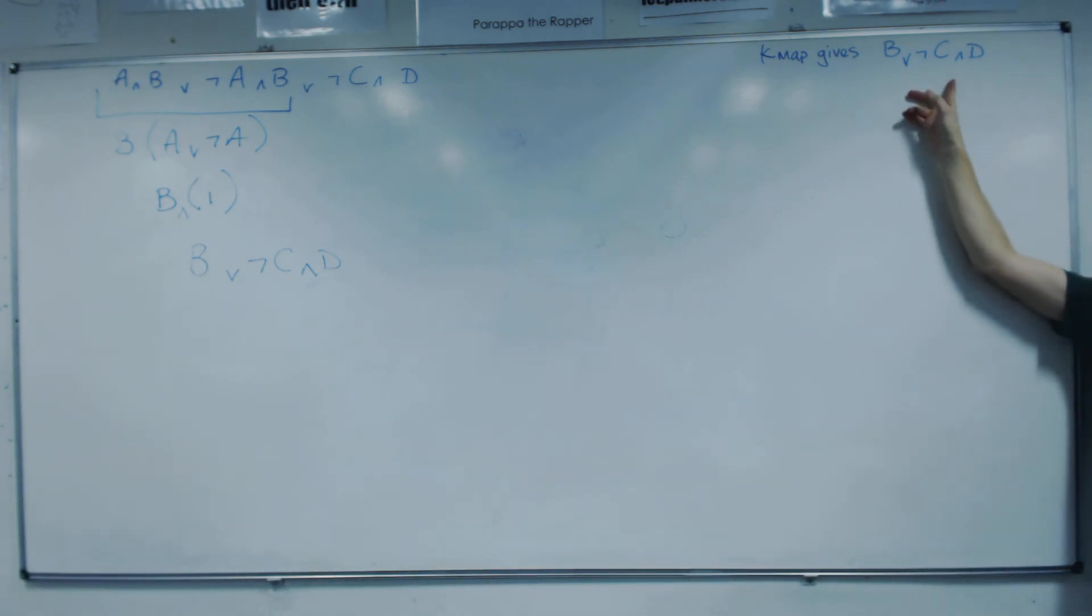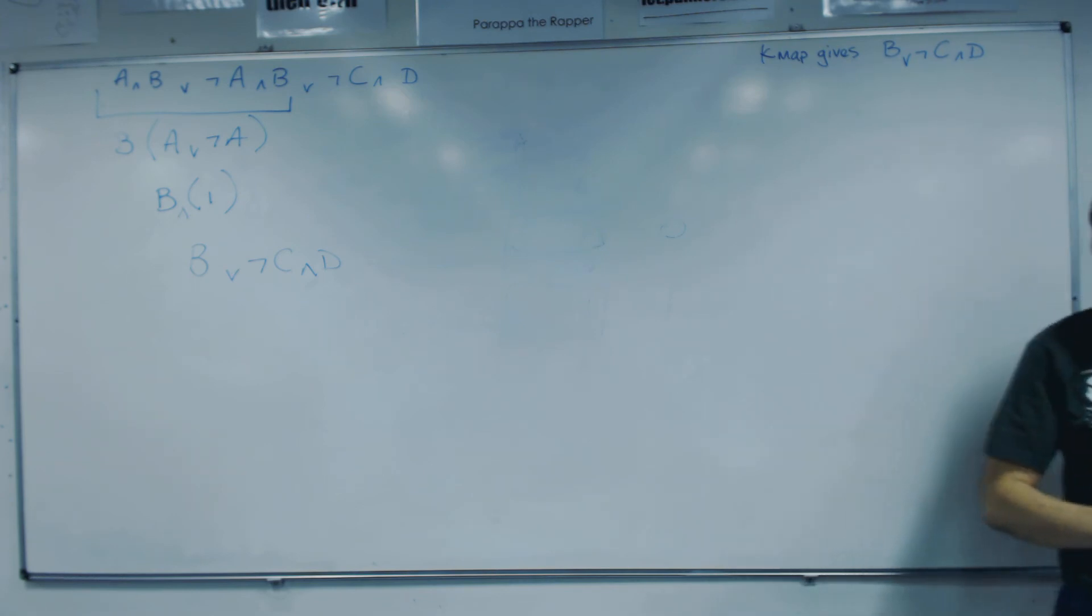Now if you look, this was the answer we got from the Carnot map. Now once you're used to doing algebra, this is quicker than doing the Carnot map way for this expression, because it is quite trivial to draw a Carnot map of that. Once they get bigger, the Carnot map is a little bit more work, but so is the Boolean algebra as well. So it becomes a choice, if in a question you get told to just simplify something, do whatever you feel is easiest for you.